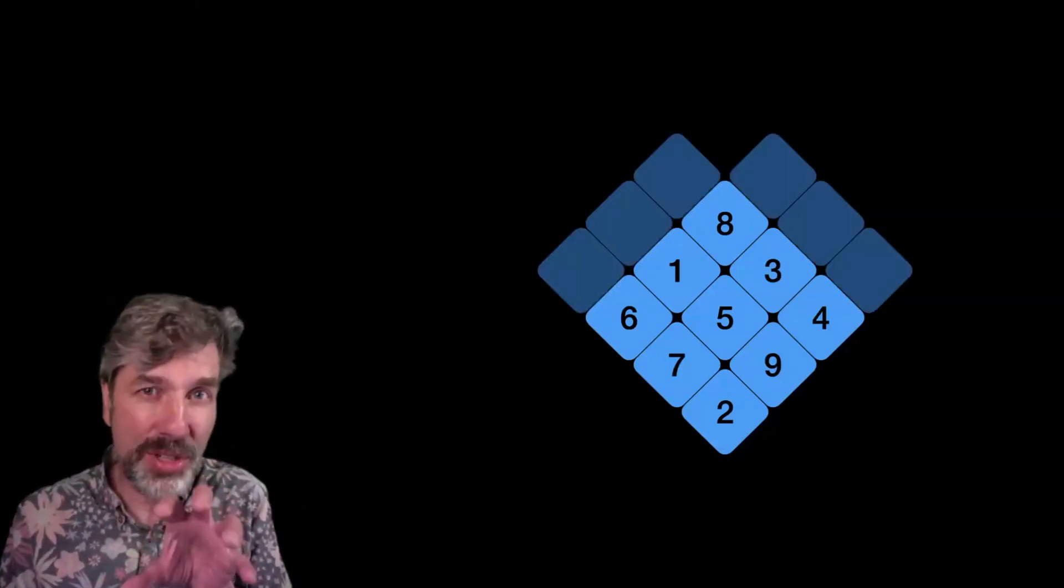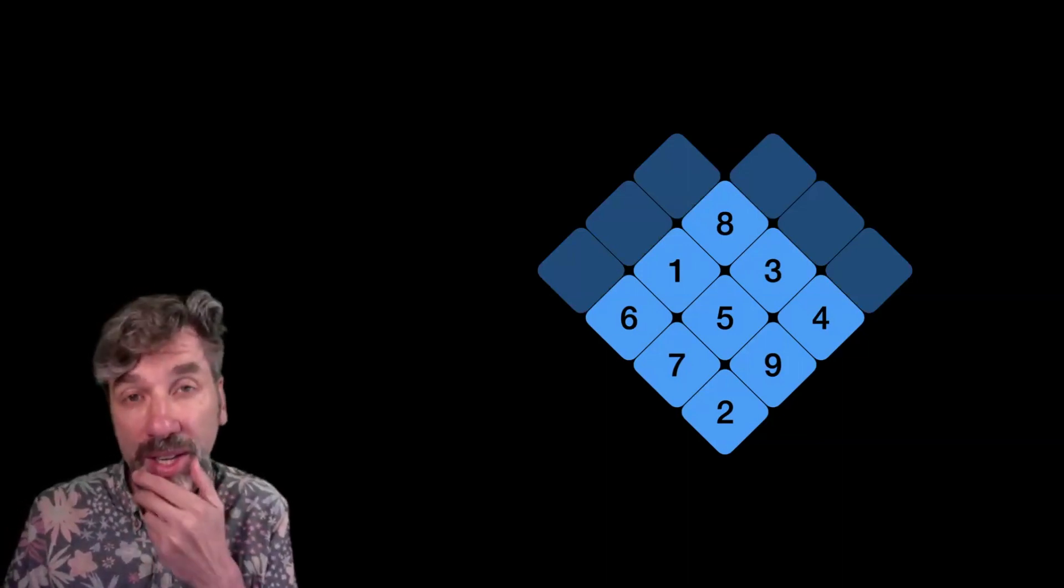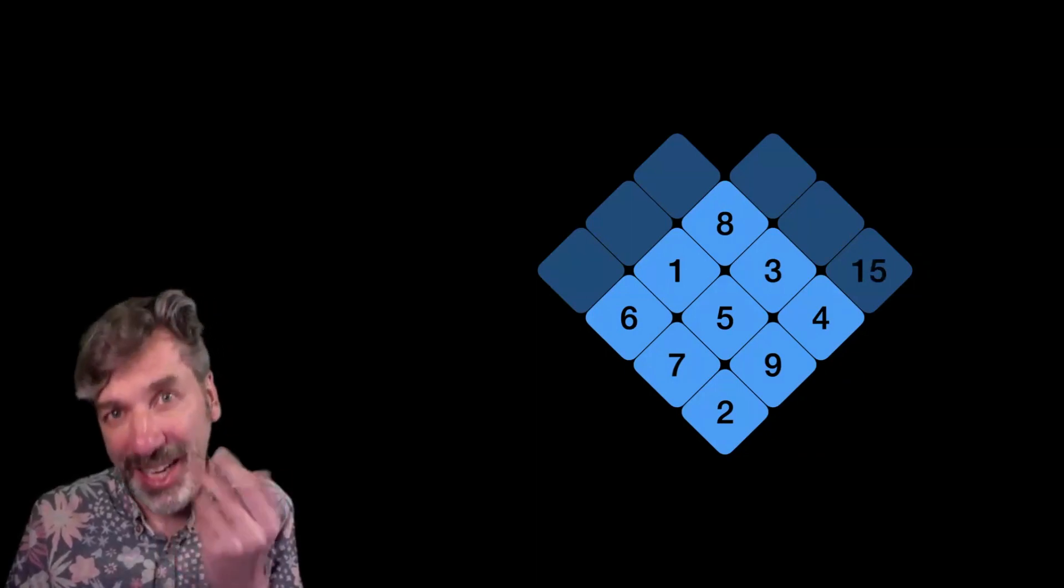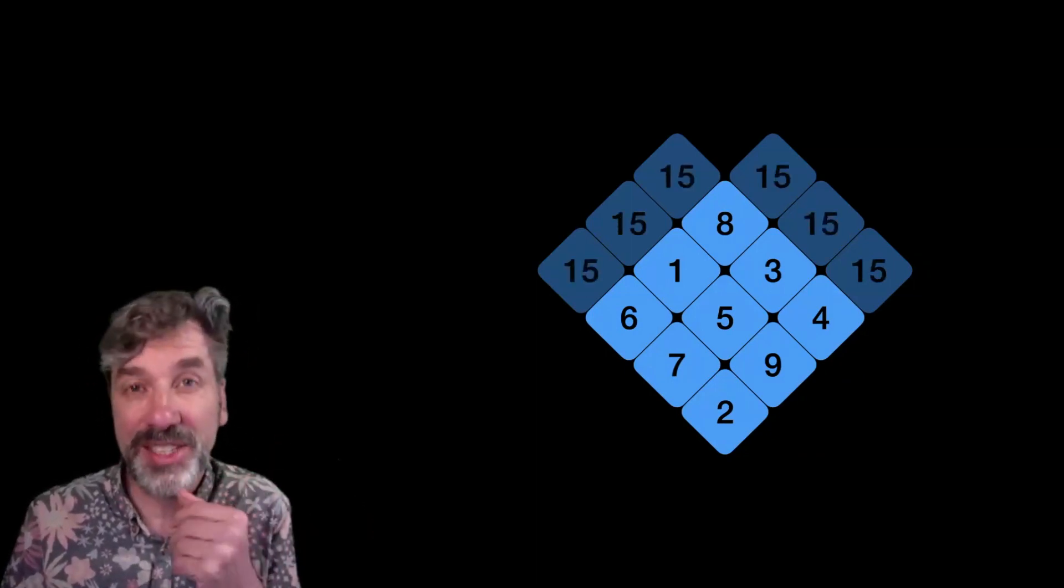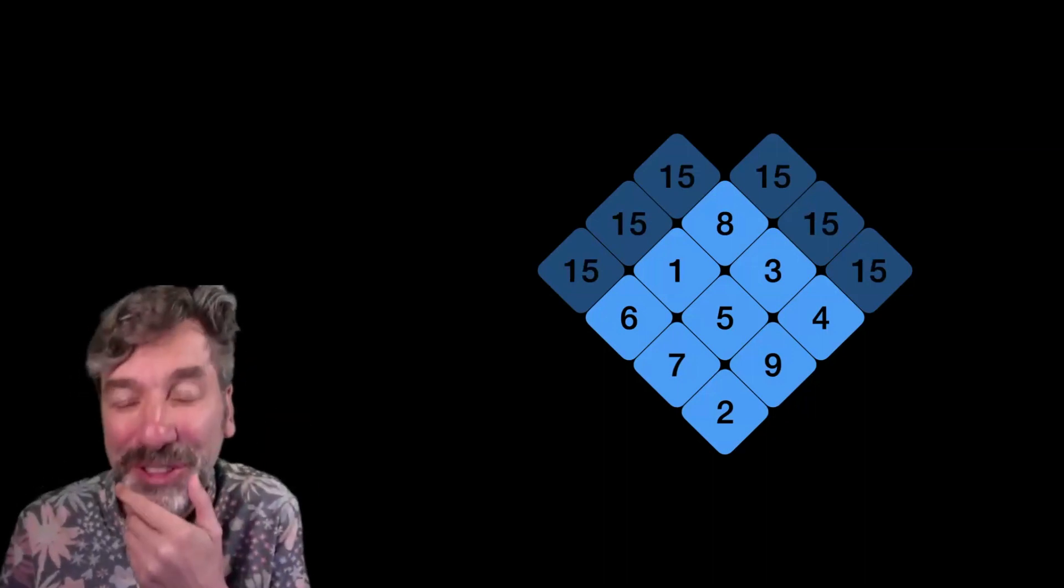You know any of the rows or columns, if you look, for example, at the 2, 9, and 4 here, they add up to 15. If you look at the 7, 5, and 3, they add up to 15. And you can look at any of these different rows and columns at an angle, and they add up to 15.